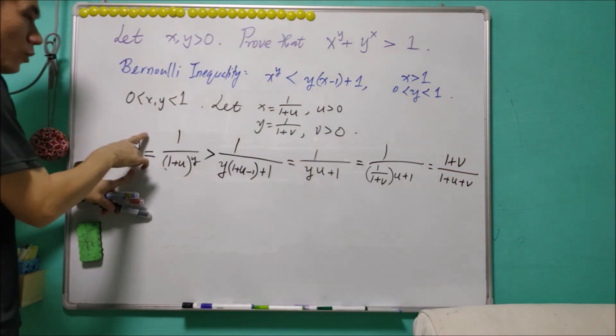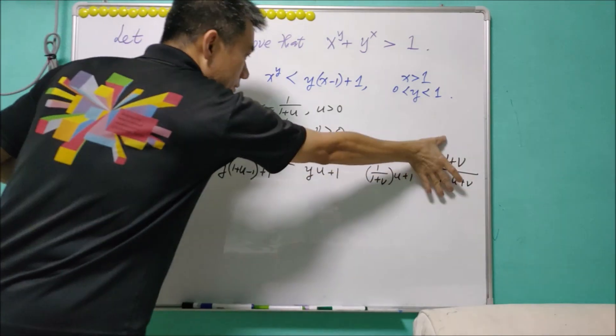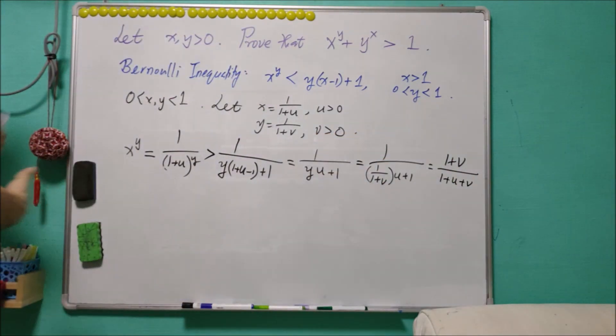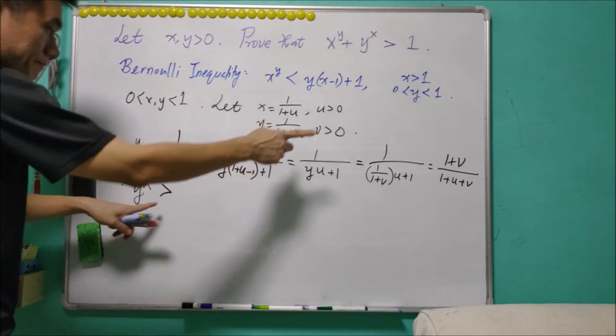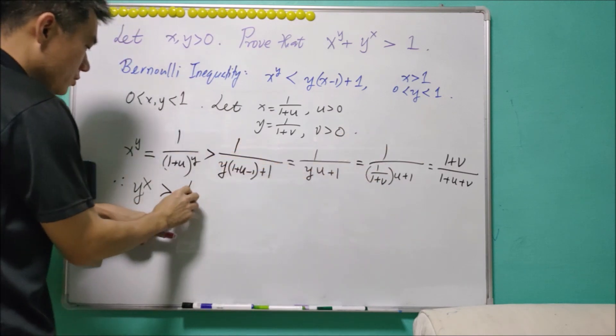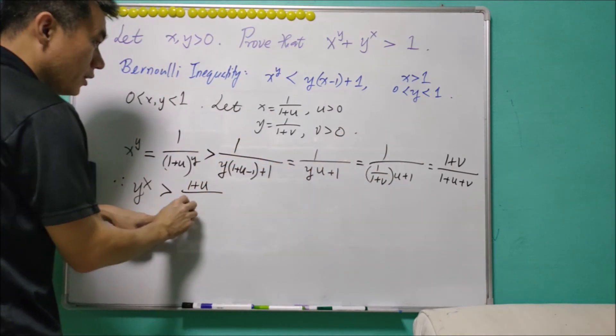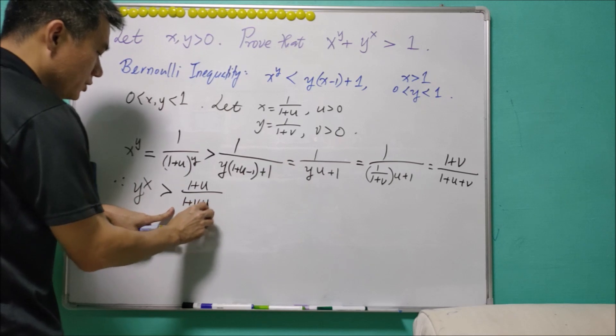In this case, x to power y is greater than this term. And using the similar argument, we can easily get that y to power x will be greater than... we interchange the u and v. So this is (1 plus u) over (1 plus v plus u).